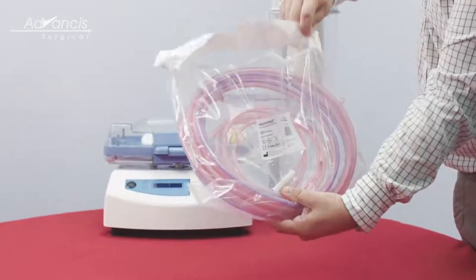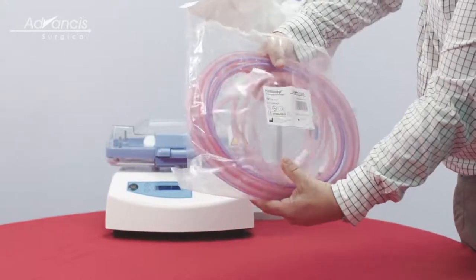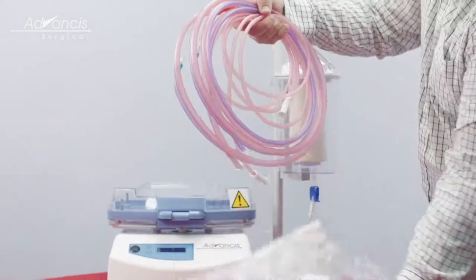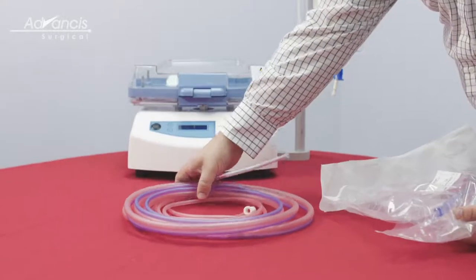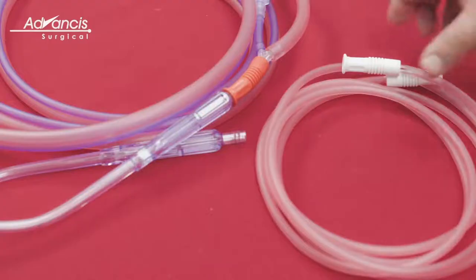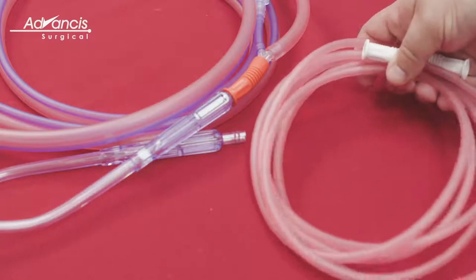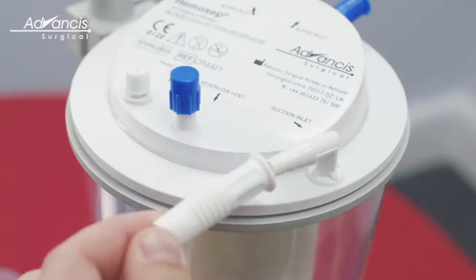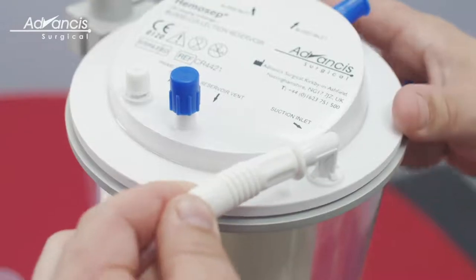Open the Hemosep Intraoperative Kit Suction and Aspiration lines aseptically and pass to the scrub nurse. Have the scrub nurse pass the single piece of red tubing to the circulator and connect this to the reservoir on the port marked Suction Inlet.